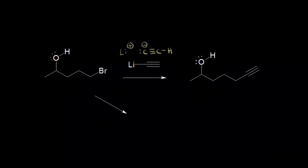Sometimes when you're trying to synthesize a molecule, you have to use a protecting group. In this video we're going to talk about how to protect alcohols using a trialkylsilyl group. Our goal is to make this target compound over here on the right, and we need to start with this compound over here on the left.